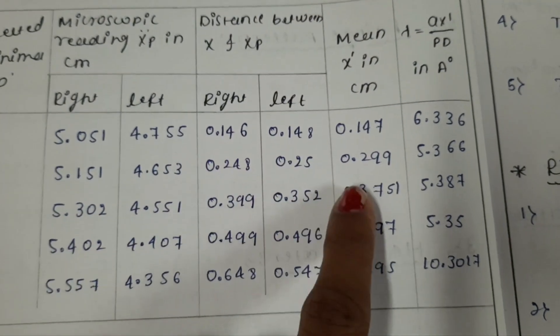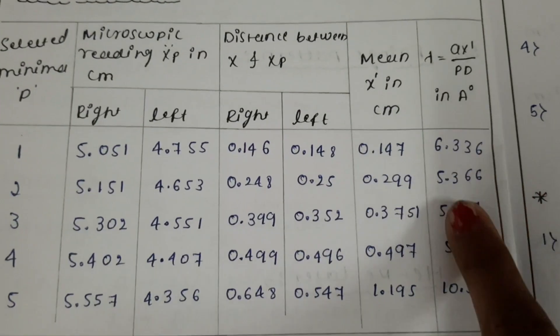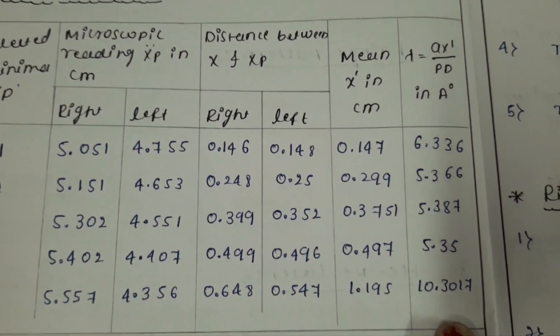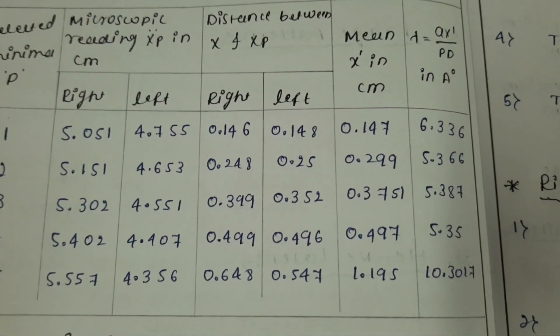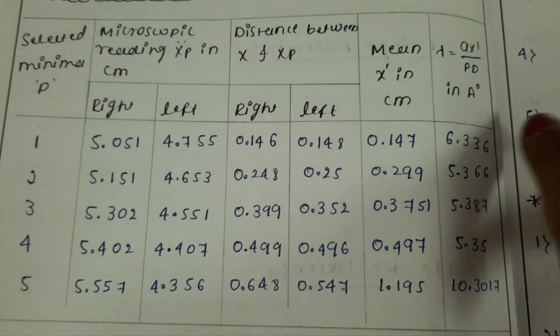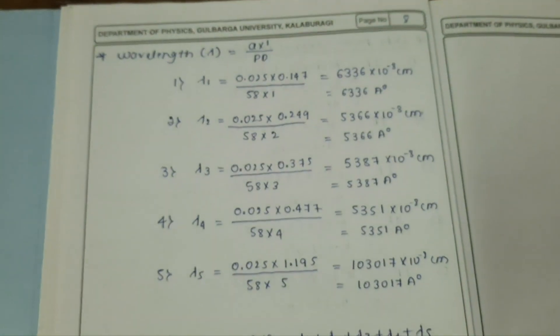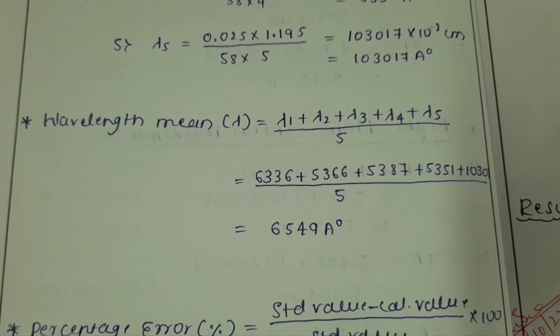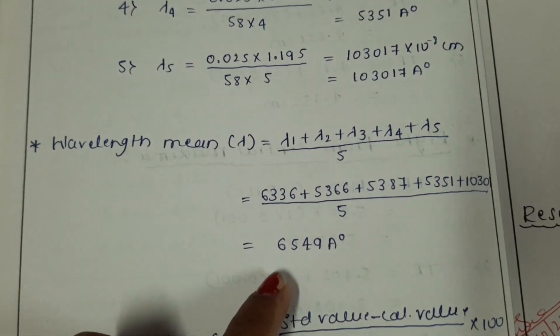Take the mean of the right and left readings and put them in the tabular column. Then calculate the wavelength using the formula given for all five readings, and take the average by dividing by the number of readings, which is 5.